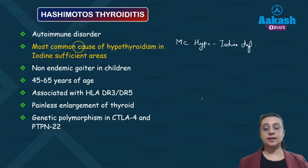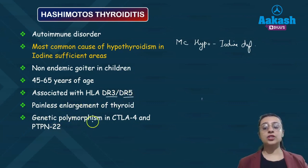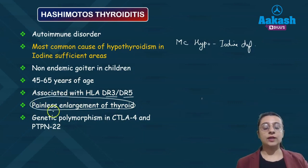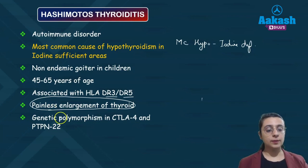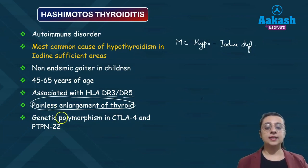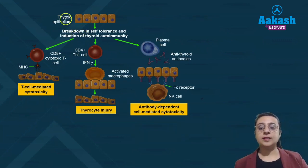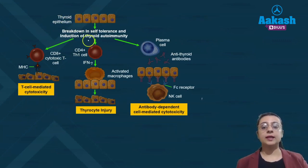Hashimoto's thyroiditis is associated with HLA-DR3 and DR5, and with genetic polymorphisms in CTLA-4 and PTPN-22. It leads to painless enlargement of the thyroid, and is most common in middle-aged females. The autoimmune basis of its pathogenesis is very important to understand.